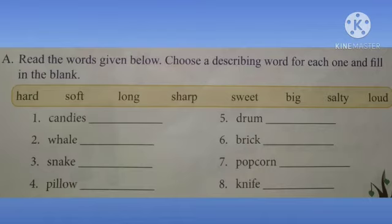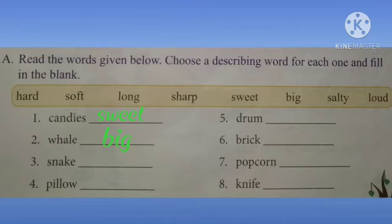The first word is 'candies.' The suitable describing word is 'sweet' — sweet candies. The next word is 'whale' — big whale. The third word is 'snake.' The suitable describing word is 'long' — long snake.